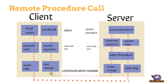The client makes a local call. The client stub marshals the local call and sends it to the other machine. The other machine then receives the request, selects the procedure, unmarshals the arguments, and executes the procedure.